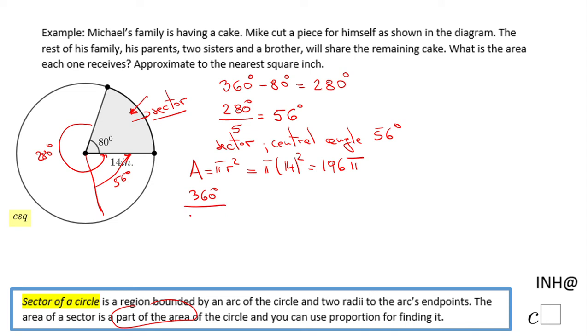Now we want to find out how much is 56 degrees of this cake, and I'm going to call it x. We can set up a proportion: 360 degrees over 196π equals 56 degrees over x.